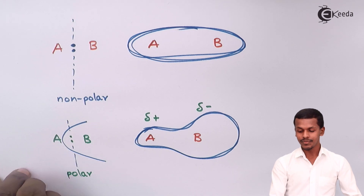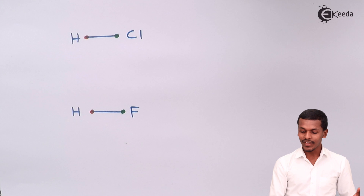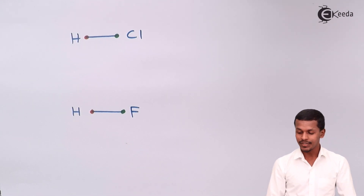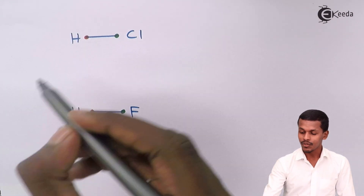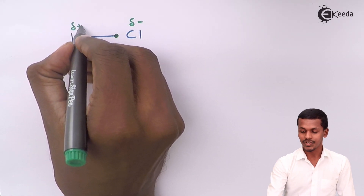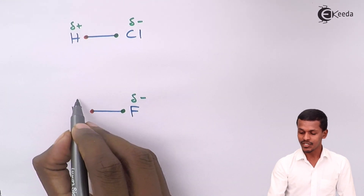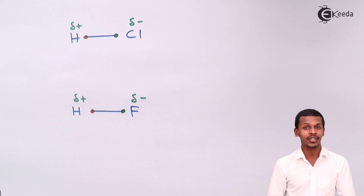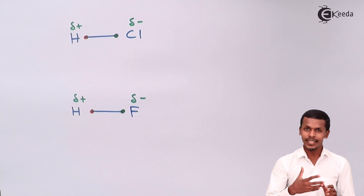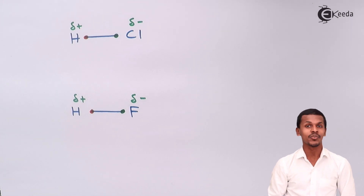Similarly, in HCl, chlorine is more electronegative than hydrogen, so chlorine has a partial negative charge and hydrogen has a partial positive charge. For HF, fluorine has a partial negative charge and hydrogen has a partial positive charge. The polarity of a polar bond is denoted with a unit represented by the symbol μ (mu).